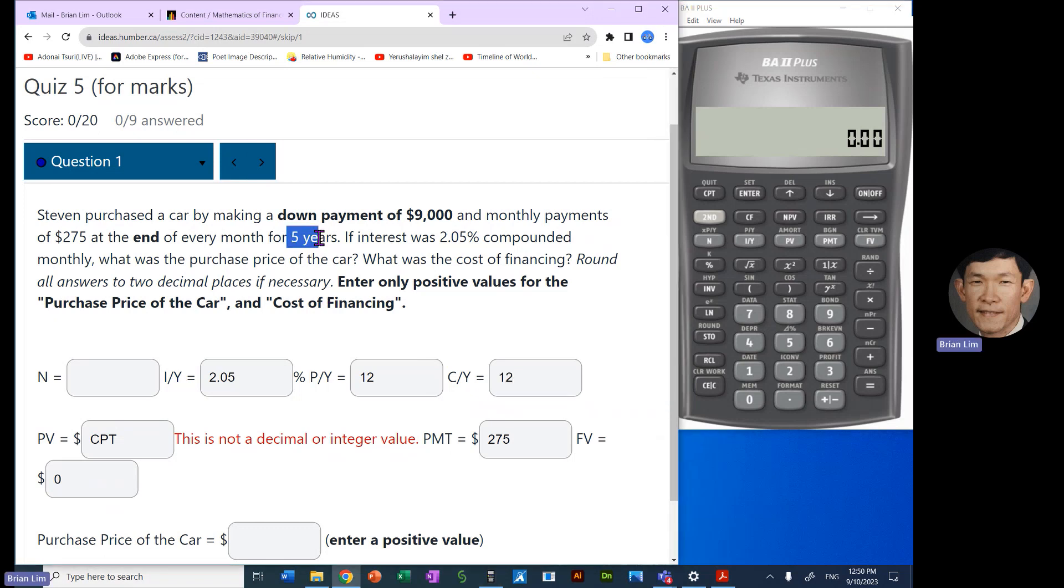Now we need a number of years to calculate N. So we put five and then we go second N. And N turns out to be 60. Alright, now we are computing. We need to put in interest rate next. Yes, 2.05. So 2.05, that is the interest rate.